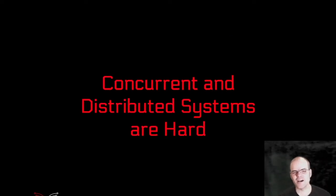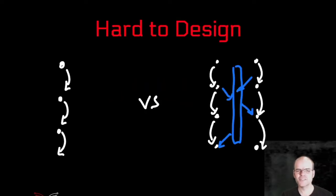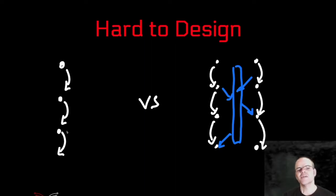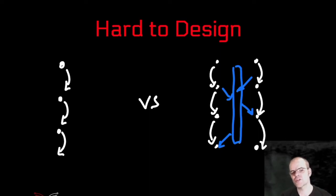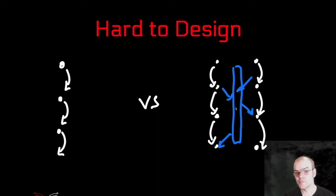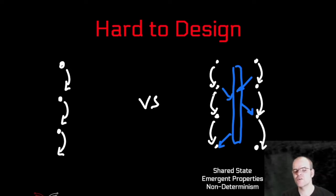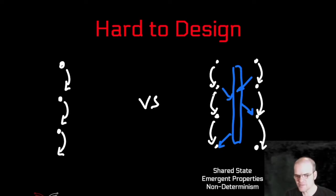Unfortunately, concurrent and distributed systems are very hard to design. Unlike a sequential program, where you can follow a linear thread of reasoning and follow every state of the program from one step to the other, in a concurrent program you have multiple threads of execution with possible interactions and shared state. You can't follow just one thread of execution — you have to follow multiple threads and their interactions. Because of that shared state, and because the scheduling is not deterministic, you can get different results depending on how fast each of those threads execute.